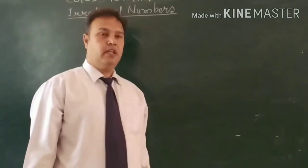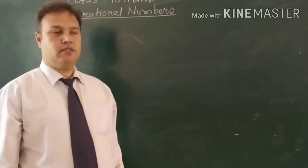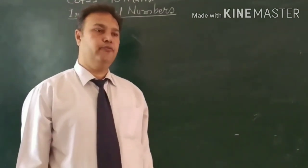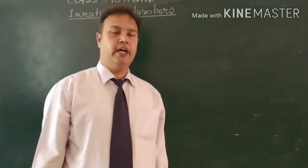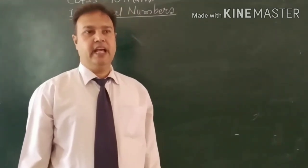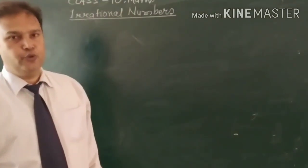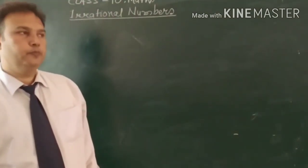Irrational numbers are those numbers that cannot be represented in the form of P upon Q, where P and Q are integers and Q is not equal to 0.